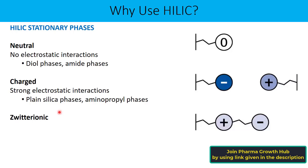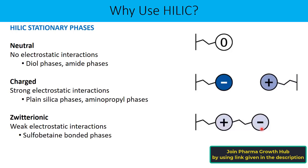The third kind of HILIC stationary phase contains both positive and negative charges and is called zwitterionic. As you can see in the diagram, it has both a positive charge — such as quaternary ammonium — and a negative charge — such as sulfonate. Because both charges are present, they can be counterproductive and cancel out each other's effect, which weakens the electrostatic interaction somewhat. Sulfobetaine bonded stationary phase is the example of a zwitterionic HILIC stationary phase.